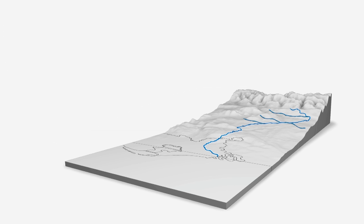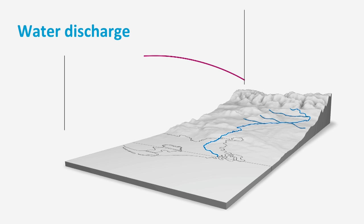Tributaries joining the main river lead to an increase of the water discharge in the streamwise direction. Moreover, the discharge is not constant, varying over time for instance due to local precipitation. The more downstream, the smaller the variability of water discharge, due to the relatively smaller influence of locally high precipitation rates.